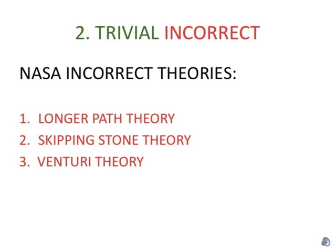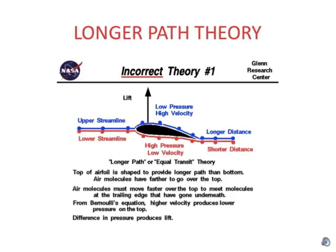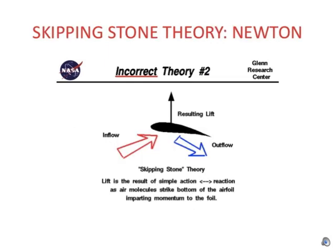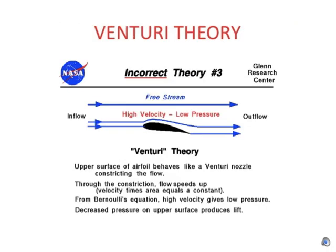The American Space Administration, NASA, helpfully lists on its website several trivial and incorrect theories, including the well-known longer path theory, the skipping stone theory going back to Newton, and the Venturi theory.